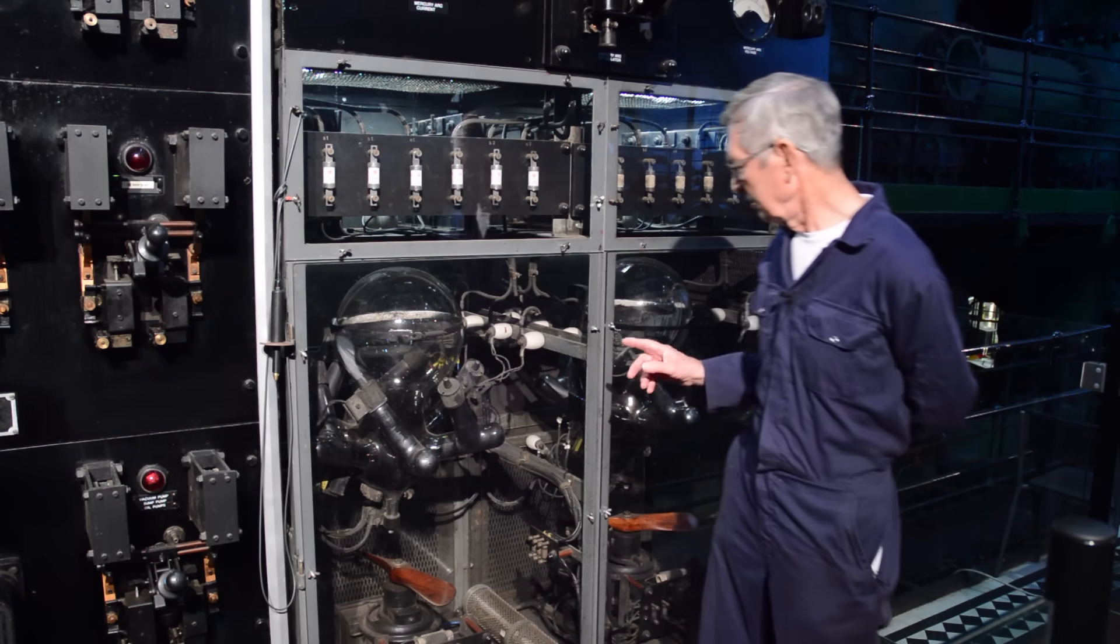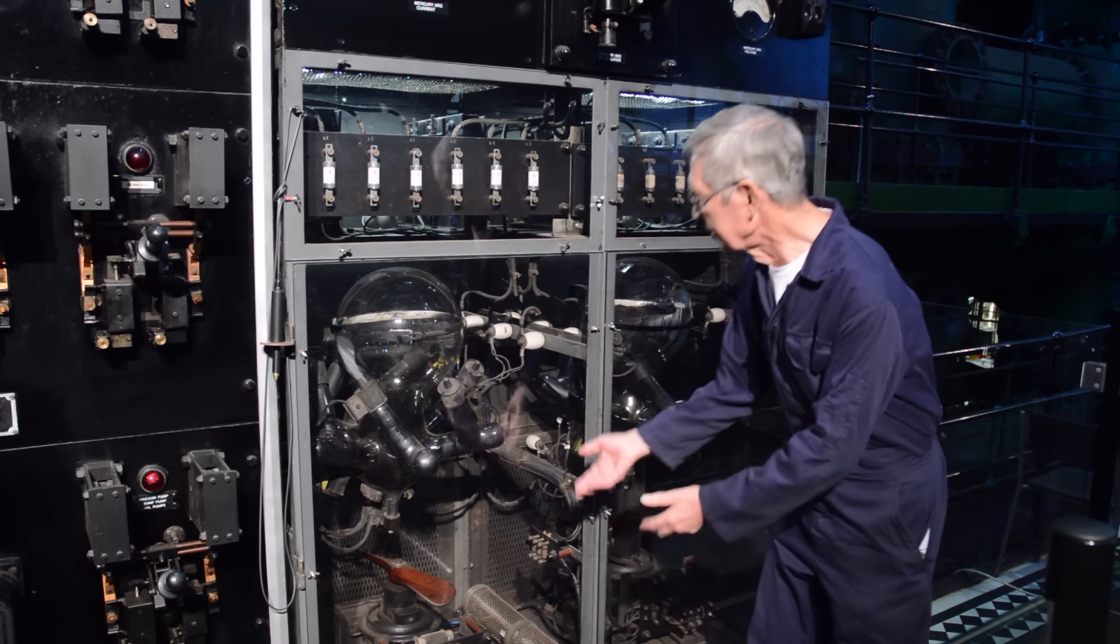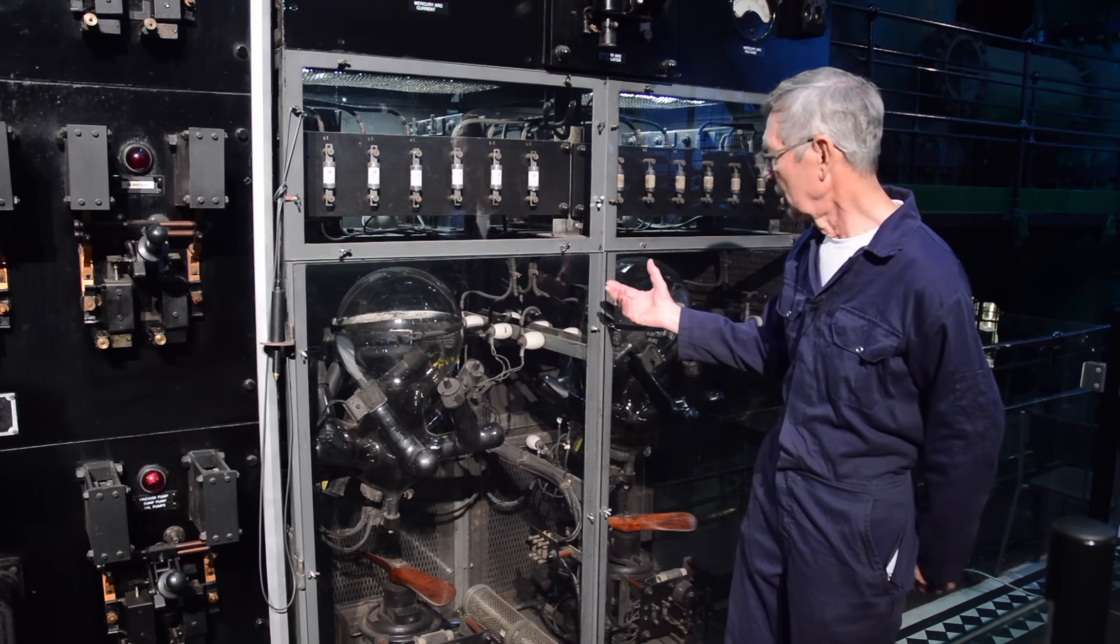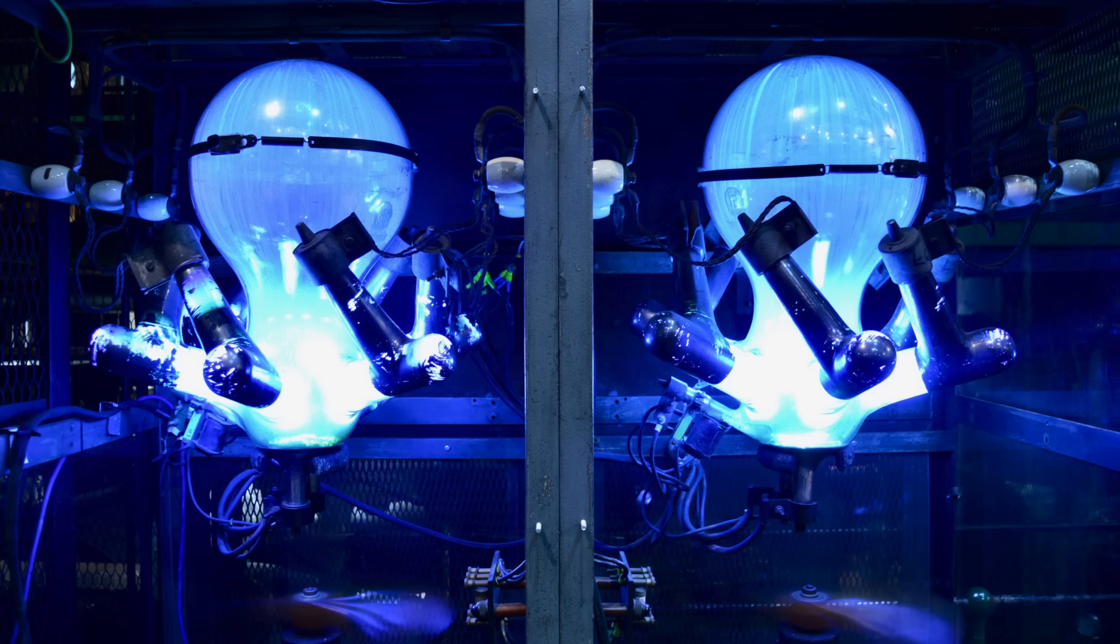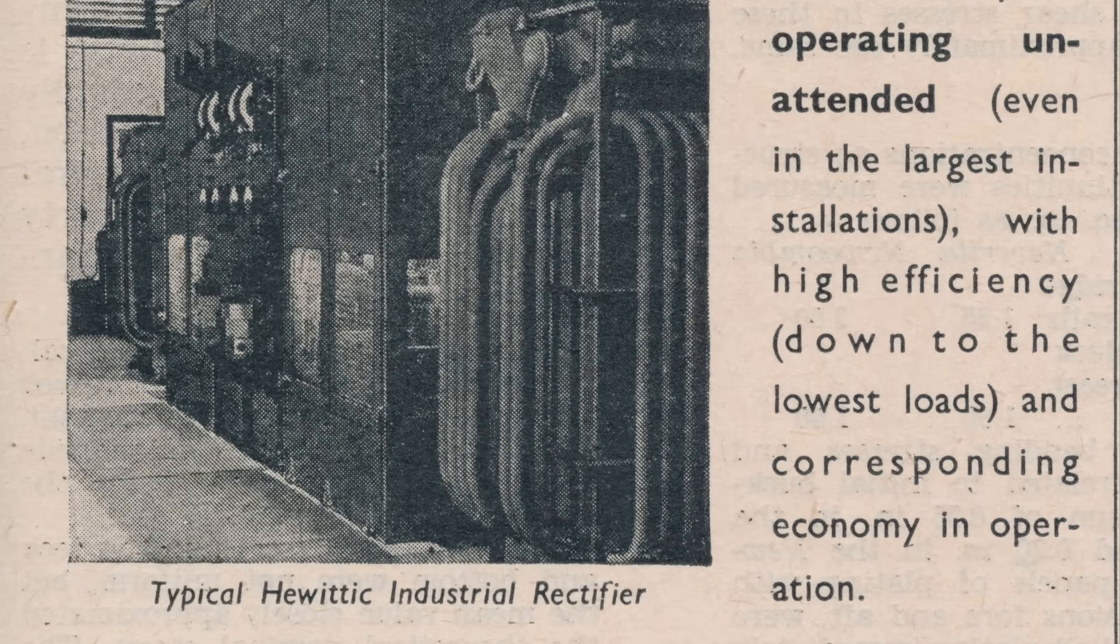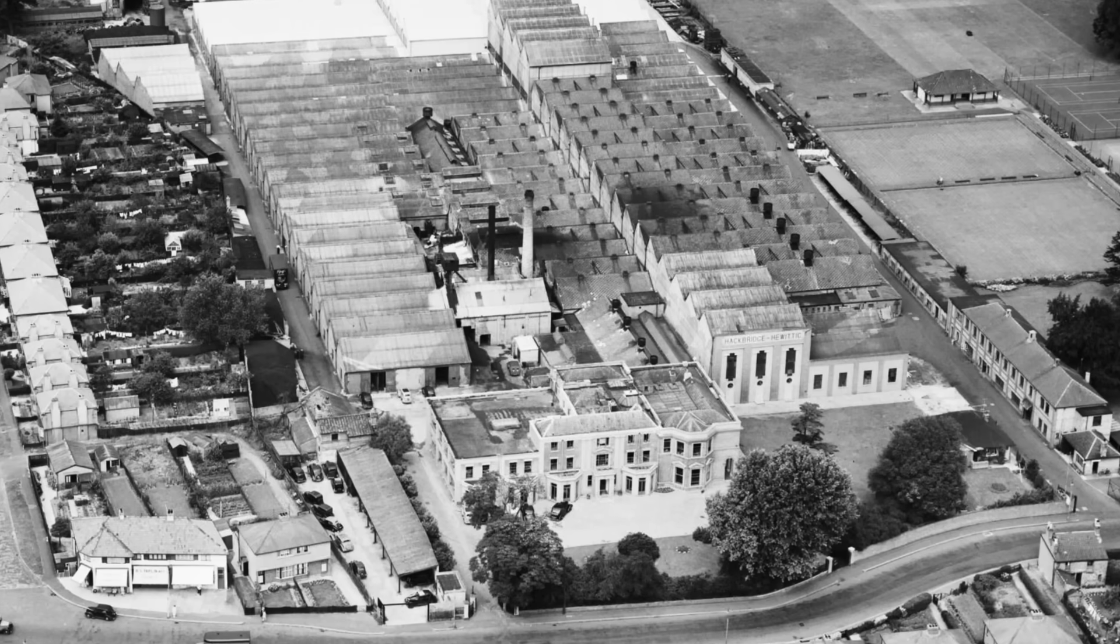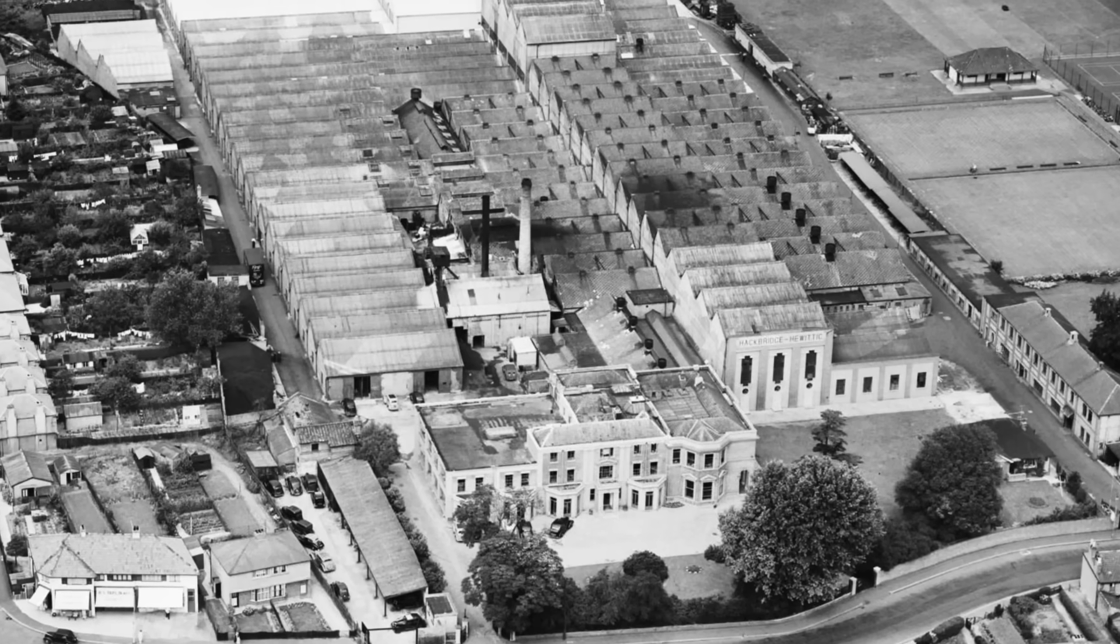These contain a pool of mercury in the bottom of the bowl which produces a vapor which fills the bowl. Around the periphery are the electrodes, the anodes which collect the current. These rectifiers were made at the Hackbridge and Hewittic company, which was actually based in Walton on Thames, just a few miles from where we are in this building today.